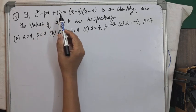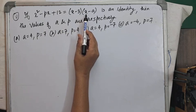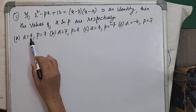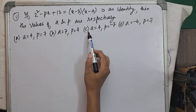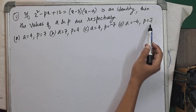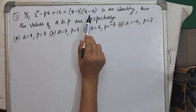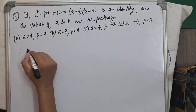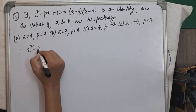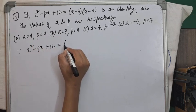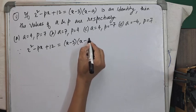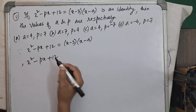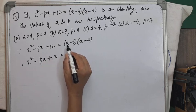Question number 5: if x² - px + 12 = (x-3)(x-a) is an identity, find the values of a and p. Options: (A) a=4, p=7; (B) a=7, p=4; (C) a=4, p=-7; (D) a=-4, p=7.